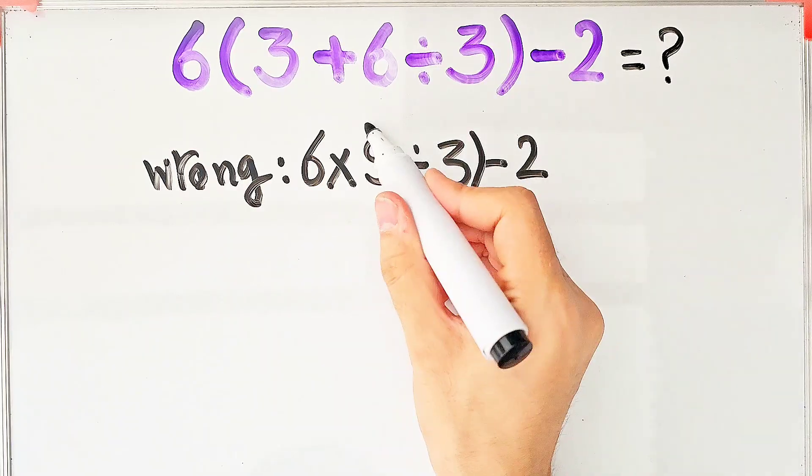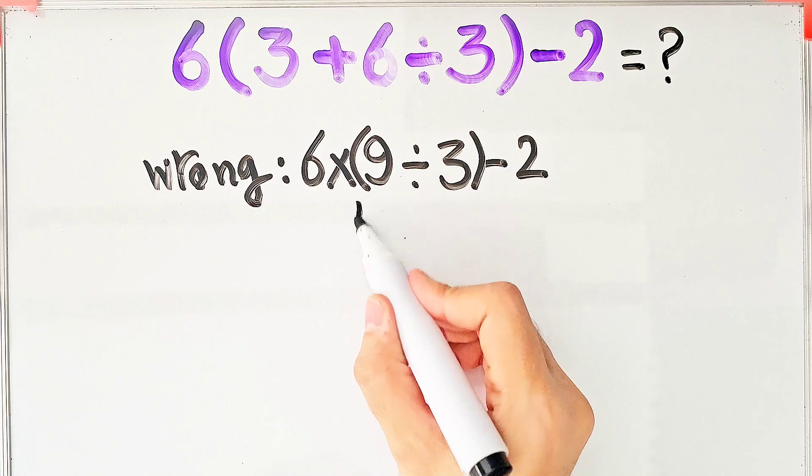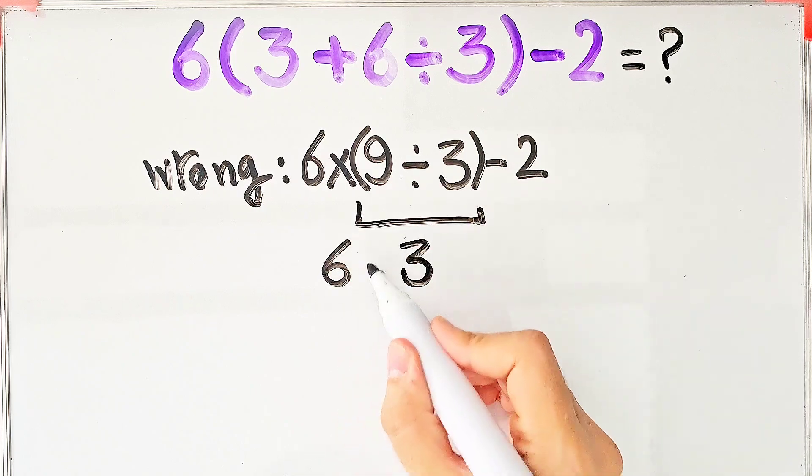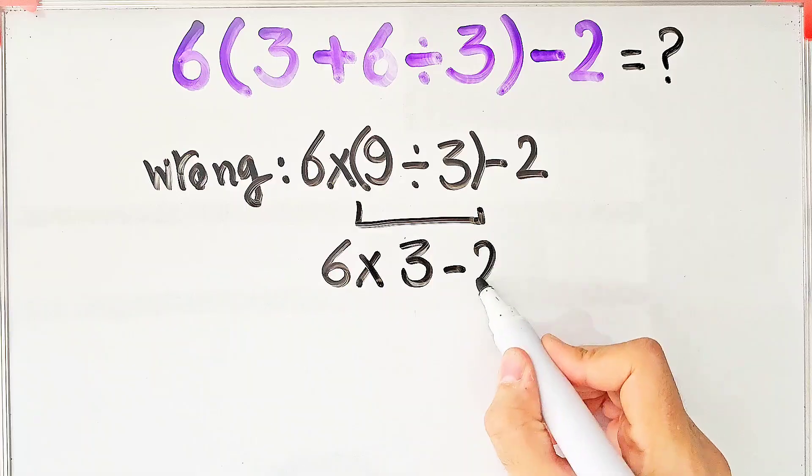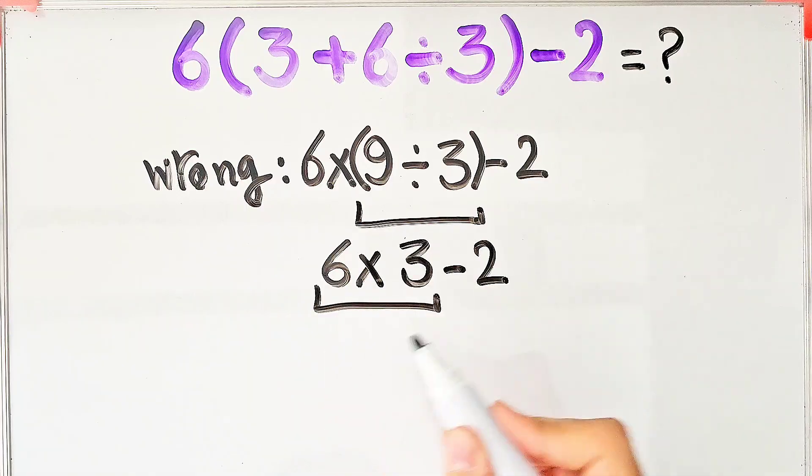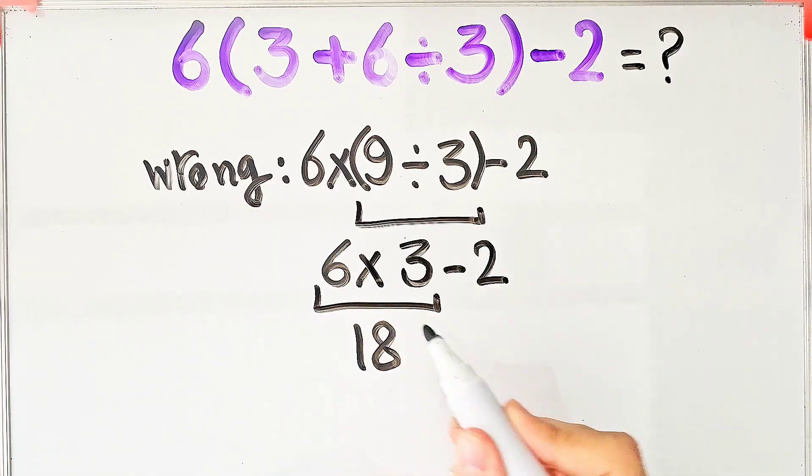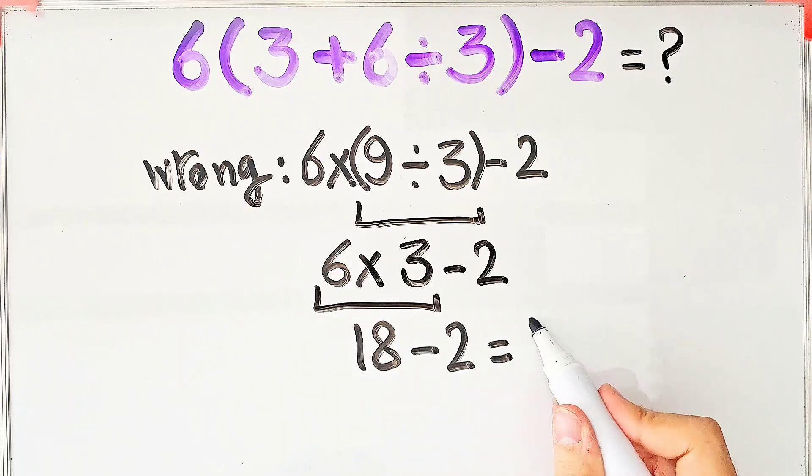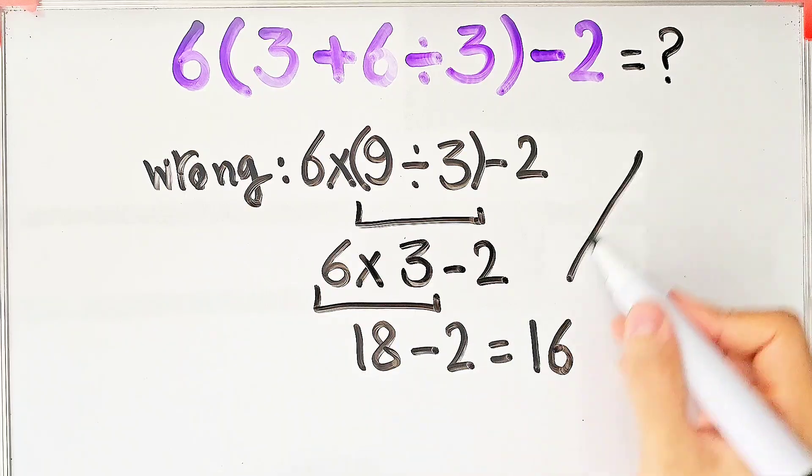After that, they do this division: 9 divided by 3 equals 3, 6 times 3 then minus 2. 6 times 3 equals 18 and 18 minus 2 equals 16. They say the final answer of this question equals 16, but this answer is definitely wrong.